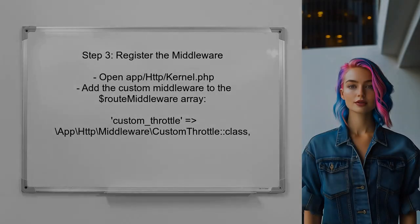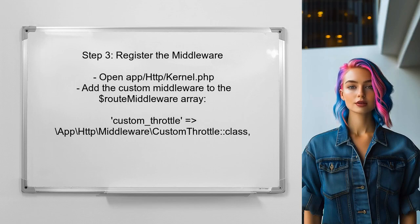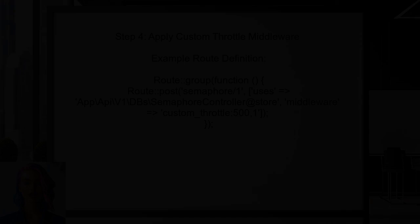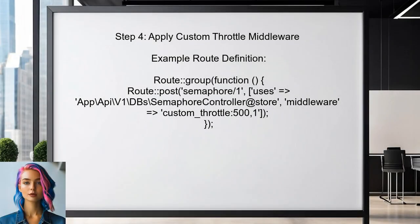After setting up the custom middleware, register it in the kernel file. This will make it available for use in your routes. Now you can apply the custom throttle middleware to your specific routes and specify the desired throttle limits directly in the route definition.